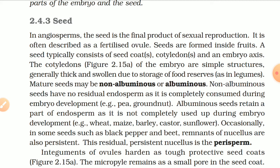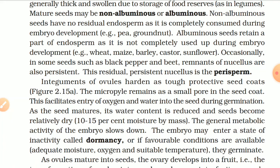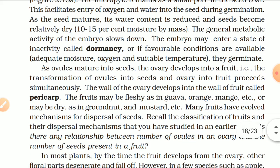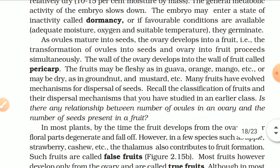Occasionally, in some seeds such as black pepper and beet, remnants of the nucellus are also persistent — this residual persistent nucellus is the perisperm. Integuments of ovules harden as tough protective seed coats. The micropyle remains as a small pore in the seed coat, facilitating entry of oxygen and water during germination. As the seed matures, its water content is reduced and the seed becomes relatively dry (10–15% moisture by mass). The embryo's general metabolic activity slows down, and it may enter a state of inactivity called dormancy, or if favorable conditions are available — adequate moisture, oxygen, and suitable temperature — they germinate. As ovules mature into seeds, the ovary develops into a fruit simultaneously.